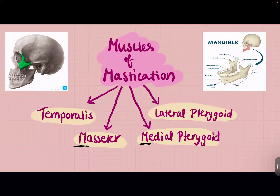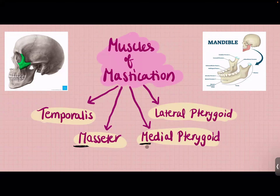The temporalis and lateral pterygoid are important for opening our mouth, and the masseter and medial pterygoid are important for closing our mouth. A way to remember this: M and M are always together, and when you try to say the letter 'M' you have to close your mouth. So masseter and medial pterygoid close the mouth, while temporalis and lateral pterygoid open the mouth.